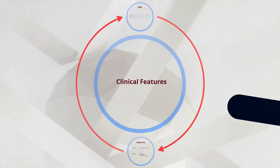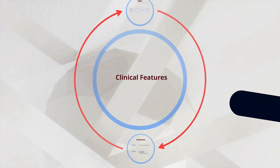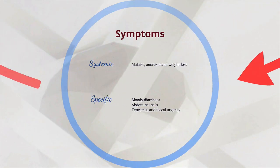Let's talk now about clinical features — the symptoms and signs. We divide symptoms into systemic and specific. This is a whole-body inflammatory condition, so systemically we see malaise, anorexia, and weight loss. For specific symptoms, there is often bloody diarrhoea, abdominal pain particularly in the lower abdomen, as well as rectal symptoms such as tenesmus and faecal urgency.